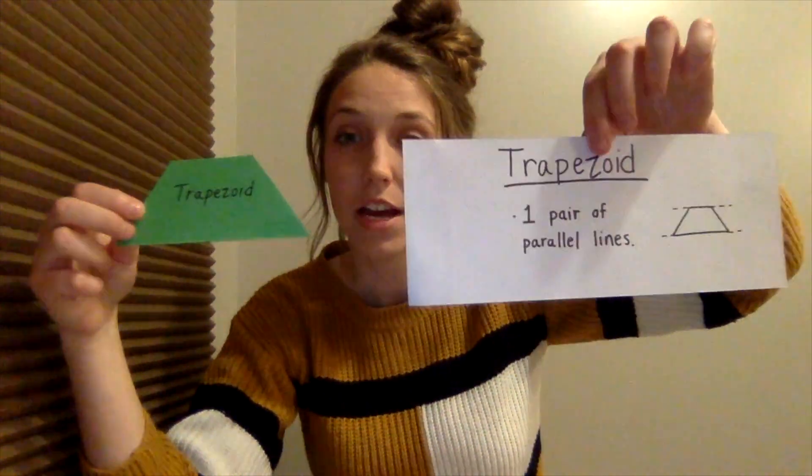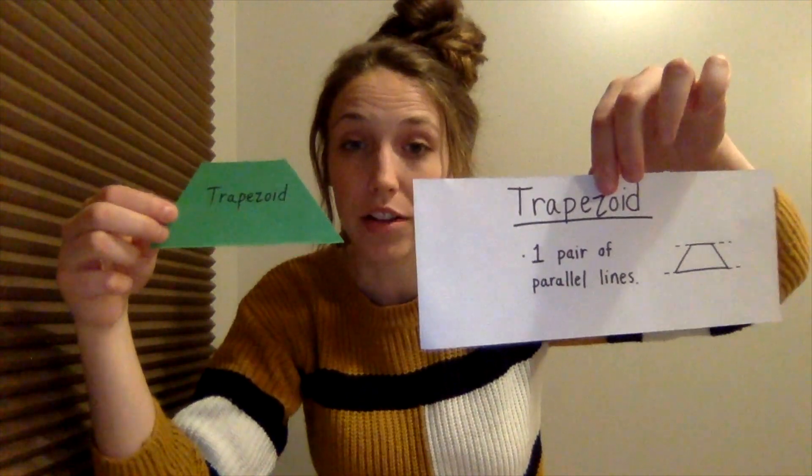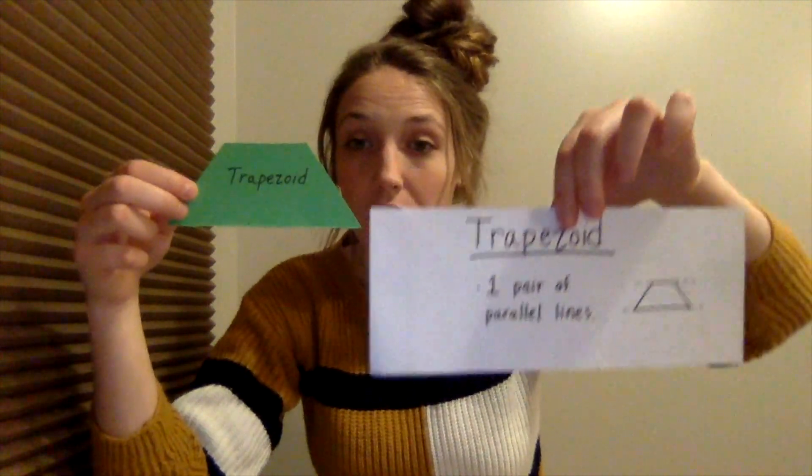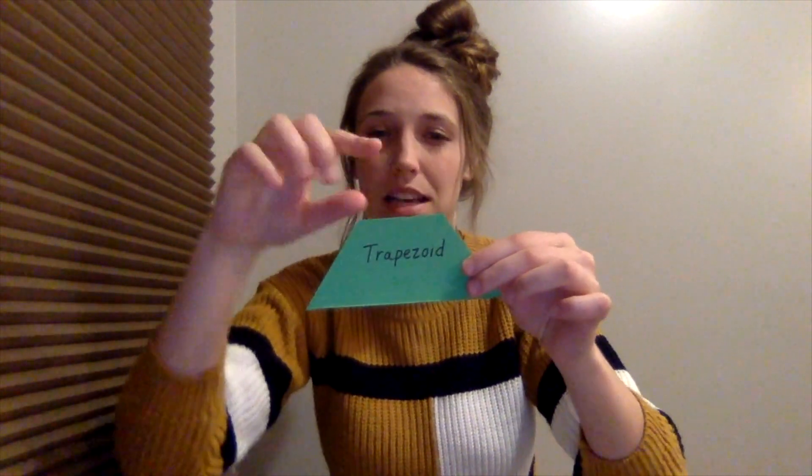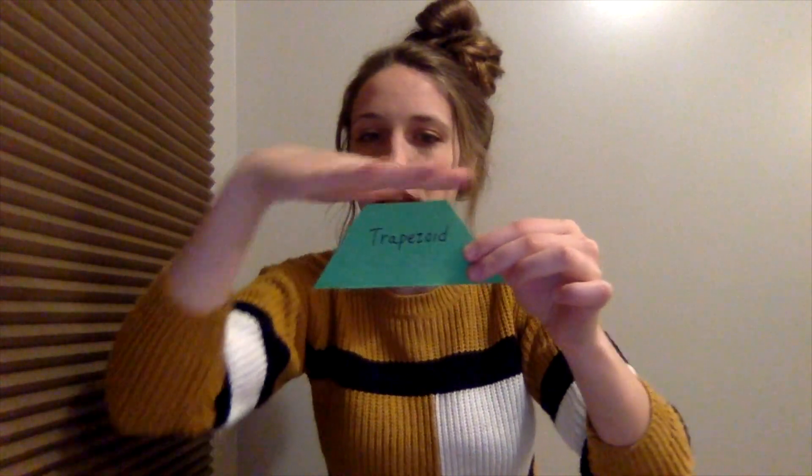Our next one is our trapezoid. The trapezoid just has one pair of parallel lines. It's a quadrilateral, so it has four sides, and there's one pair of parallel lines — that's the top line and the bottom line, because they're never going to cross. They keep going across from each other like that and never touch.